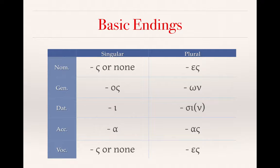Here's a chart with the basic endings of third declension nouns. Remember, third declension nouns are weird, so we may not always see these consistently. In the nominative, you'll see a sigma at the end or nothing distinctive. At the genitive, you'll see omicron sigma. In the dative singular, you'll see an iota. In the accusative singular, you'll see an alpha. In the vocative, just like the nominative singular, you'll either see a sigma or nothing at all. In the plural, you will see the epsilon sigma ending. In the plural genitive, you will see the omega nu ending. In the dative plural, you might see sigma iota nu. And in the plural accusative, you might see alpha sigma or os. The vocative form generally will be the same as the nominative form.